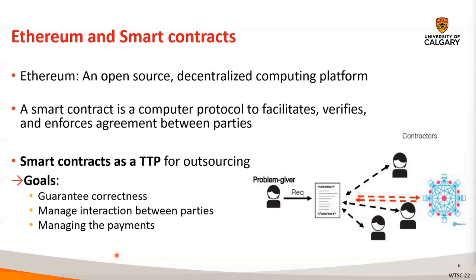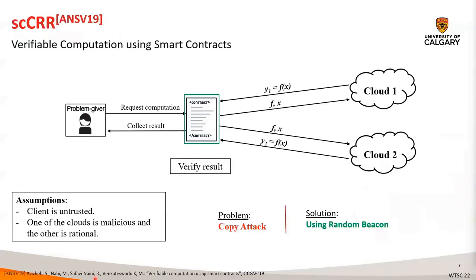The goal of the smart contract is to ensure correctness of the computation result, minimize on-chain computation, and manage the interactions between the parties. This has motivated the authors of HCCRR to use a smart contract as a trusted third party for outsourcing while adapting the CRR protocol of Kennedy et al. In HCCRR, a smart contract works as a referee between the client or the problem giver and the clouds in the CRR protocol, and allows the client to verify the result of the computation over blockchain.